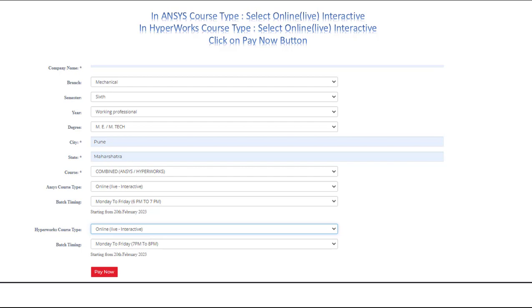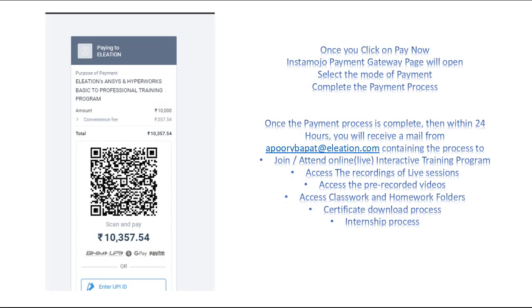Click on pay now. It will open an Instamojo payment gateway. Select the mode of payment and complete the payment process. Within 24 hours, you will receive a mail from Apoor Baphat at eleation.com containing the process to join the online live interactive training program, access recordings of live sessions, access pre-recorded videos, access classwork and homework folders, certificate download process, and internship process.